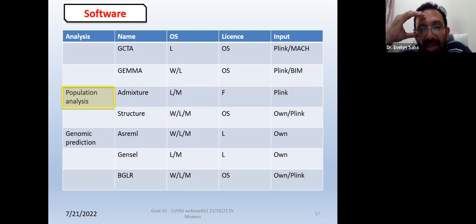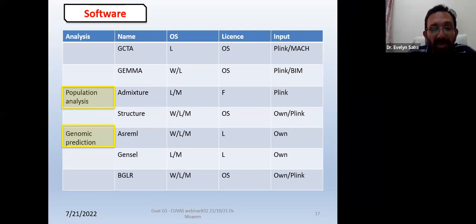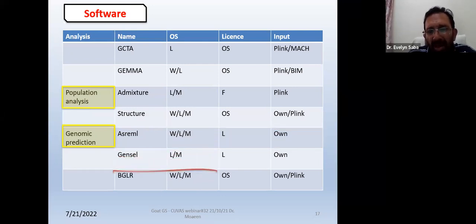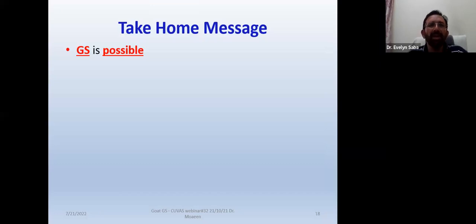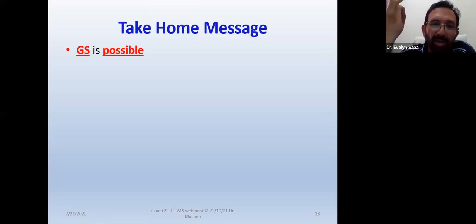For the last step — genomic prediction — you can use ASREML, which is licensed and requires money. Then GenSel — this is also licensed but provided free to collaborators of Iowa State University. We have GenSel; we have collaborated with Iowa State University and they kindly provided their software. Then BGLR — this is a sort of freeware with its own source code. These softwares can be used for genetic prediction. The take-home message from my presentation: genomic selection is possible whether you want to do it in plants, animals, or for disease prediction in human science. We can claim that with this technology, which is essentially free, we just need the genotype data to predict all this.